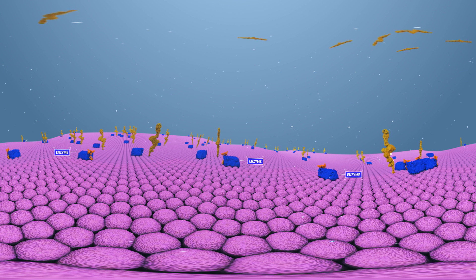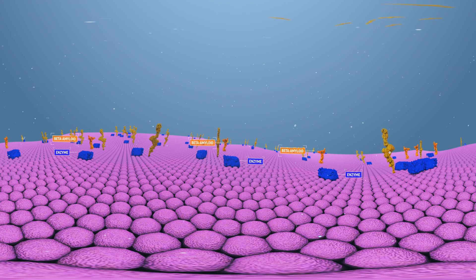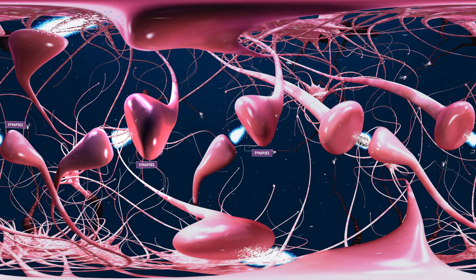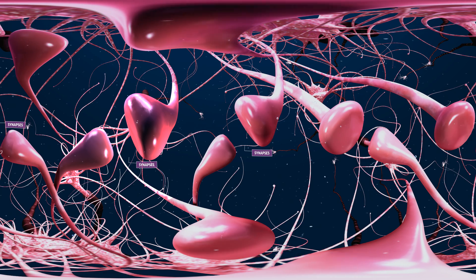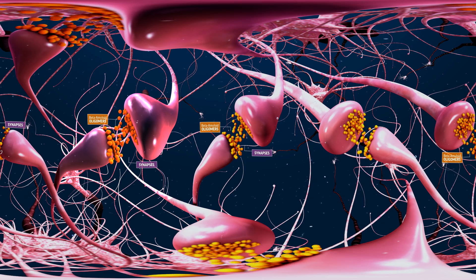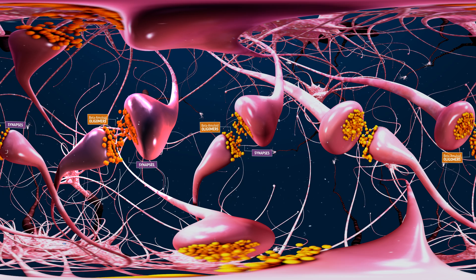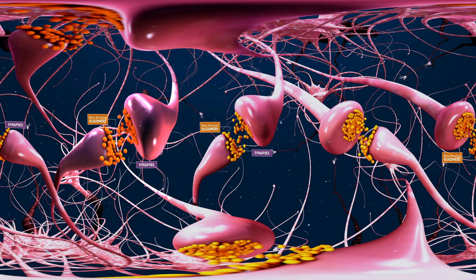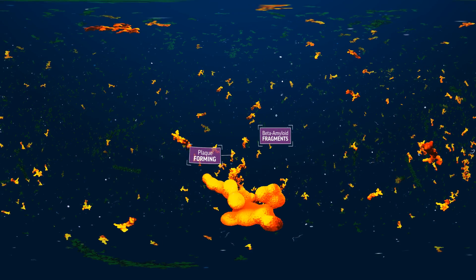Sometimes the enzymes make those cuts abnormally, releasing short protein fragments known as beta amyloid. Those beta amyloid pieces have a tendency to clump together in a way that interferes with neuron-to-neuron communication through connections called synapses.